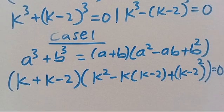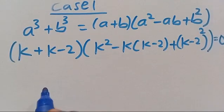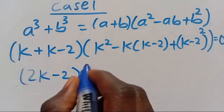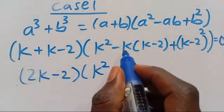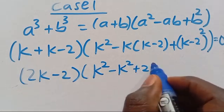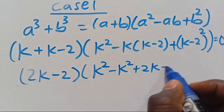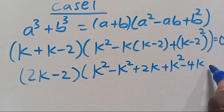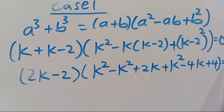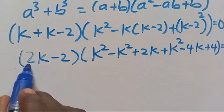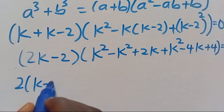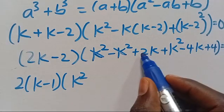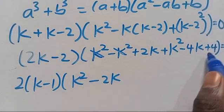From here, K plus K gives us 2K minus 2 in parentheses, then multiplied by K squared minus K squared plus 2K plus 2 times K, opening the bracket we get K squared minus 4K plus 4, equals 0.